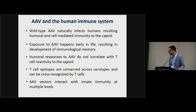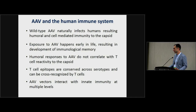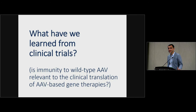Summarizing AAV and the human immune system: wild-type AAV naturally infects humans, so humans have both humoral and cell-mediated immunity to the capsid. Exposure happens quite early in life, leading to immunological memory. Antibody responses do not correlate with T-cell responses. Epitopes are conserved across serotypes, so T-cells recognize a broad range. Innate immunity is an important factor to keep in consideration. The key question is whether this is really relevant clinically — we look at clinical experience to see how it relates to immunity in the context of natural infection.